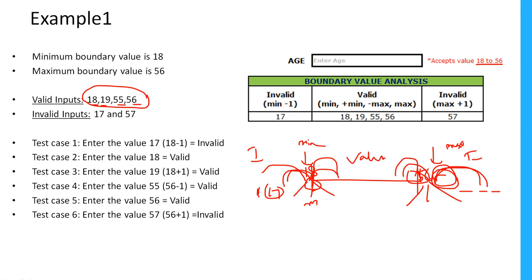The valid inputs are 18, 19, 55, and 56, and the invalid inputs are 17 and 57. We can write six different test cases: enter value 17 (minimum minus one) — invalid; enter value 18 (minimum) — valid; enter value 19 (minimum plus one) — valid; enter value 55 (maximum minus one) — valid; enter value 56 (maximum) — valid; enter value 57 (maximum plus one) — invalid.